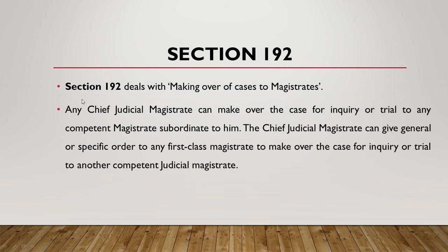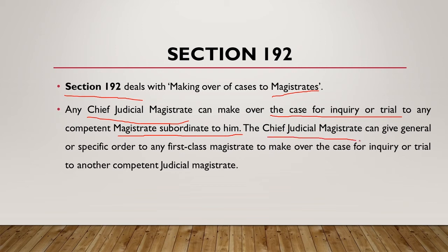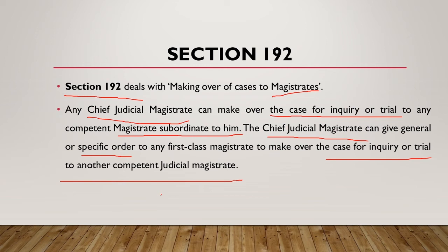Moving to Section 192, it deals with making over of cases to magistrates. Any CJM can make over the case for inquiry or trial to any competent magistrate subordinate to him. The CJM can give a general or specific order to any First Class Magistrate to make over the case for inquiry or trial to another competent magistrate who is subordinate to him.